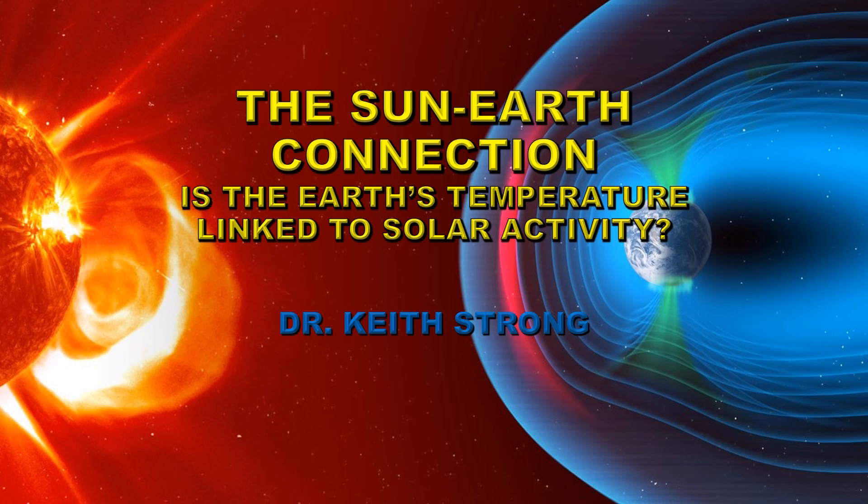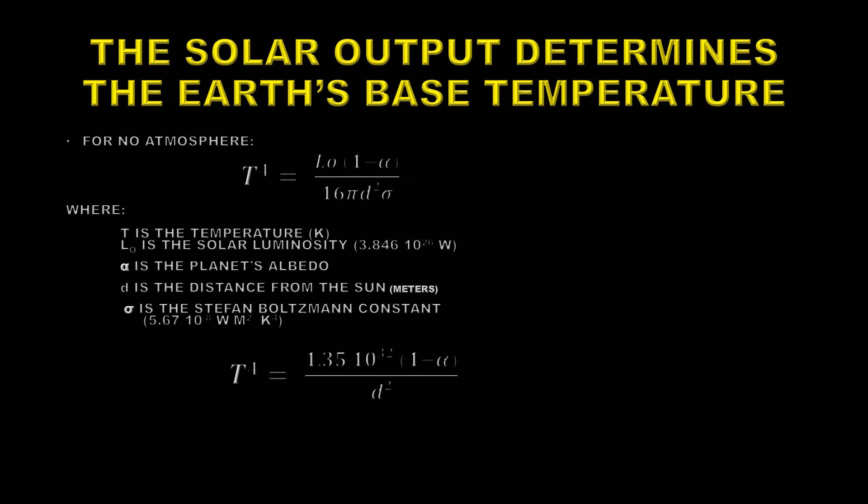The first thing is we need to know what the Earth's temperature would be. There's a very simple formula to take a look at that. This is the formula and if you want to see how it's derived you can look it up online, but basically it is the temperature to the fourth power equals the luminosity of the Sun, that's L0, times 1 minus alpha, alpha being the albedo of the Earth, divided by a bunch of constants and the distance from the Sun squared. That's the inverse square law.